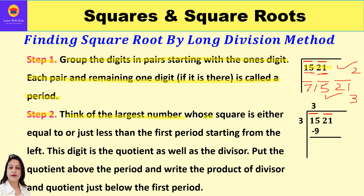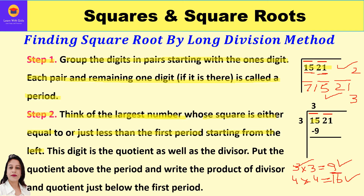Step 2 says: think of the largest number whose square is either equal to or just less than the first period. The leftmost period is 15. We know 1×1=1, 2×2=4, 3×3=9, and 4×4=16. Since 9 is less than 15 and 16 is more than 15, the largest number we can take is 3, whose square 9 is less than 15.